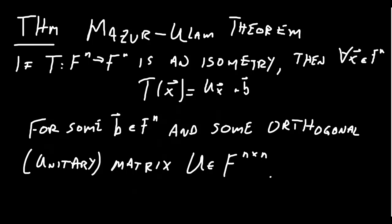To summarize, we arrive at our last theorem for this section: the Mazur-Ulam theorem, which connects the notions of isometries with orthogonal matrices. An isometry is a function on a vector space for which distance is preserved. If a map T is an isometry, it can be written as an affine transformation Ux plus B, where B is any translation vector and U is any orthogonal or unitary matrix. So every isometry is an affine transformation using an orthogonal or unitary matrix.